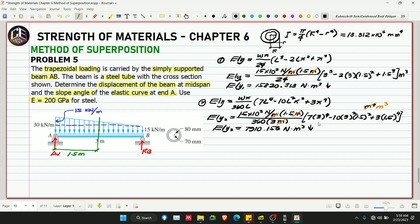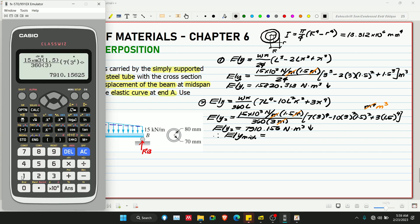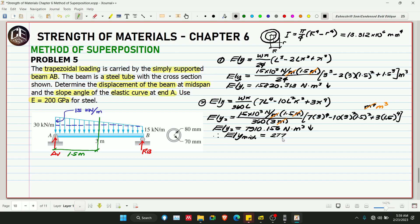Therefore, we can now get the total EIY at midspan. Adding them: 1518.20313 plus 7910.156 equals 23730.469 newton meter cubed.